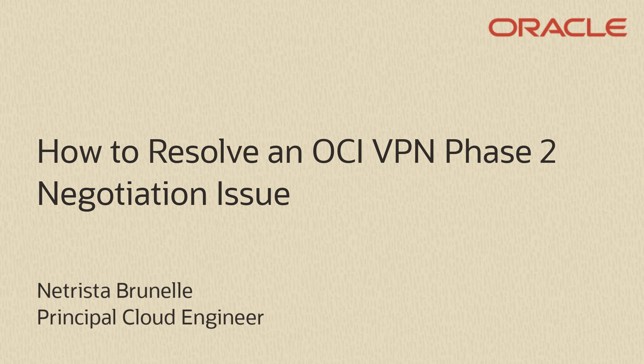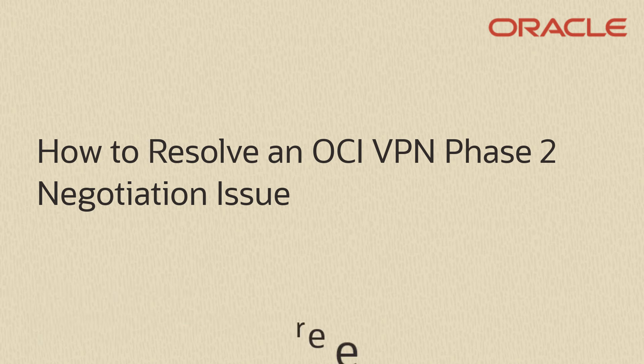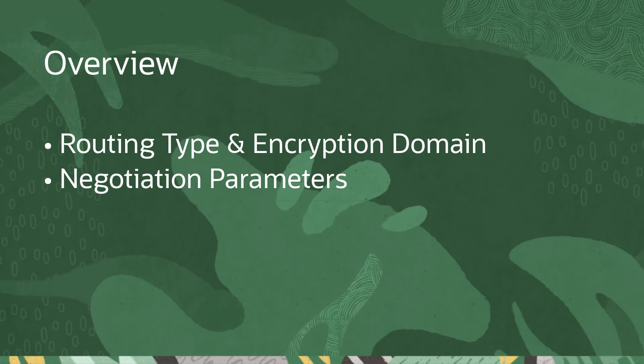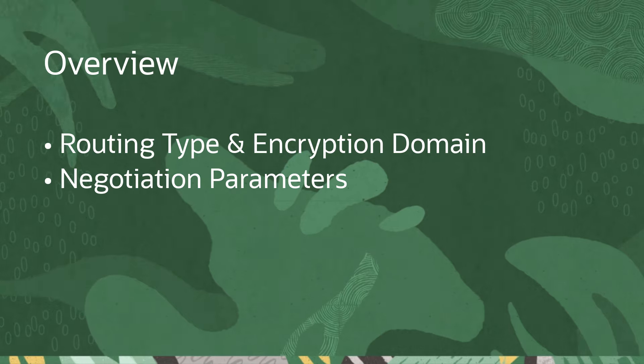Phase 2 negotiation is a necessary component of VPN connectivity. It facilitates traffic flow between VPN peers and is negotiated every 3,600 seconds by default. Consequently, if you encounter VPN tunnel resets or other unexpected behavior on an hourly basis, Phase 2 configuration is likely the cause. This presentation covers steps you can take to screen for Phase 2 negotiation issues.